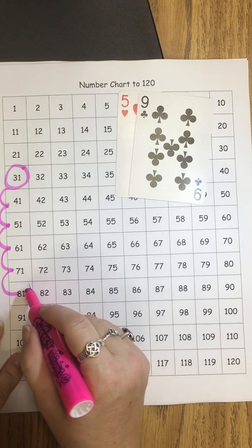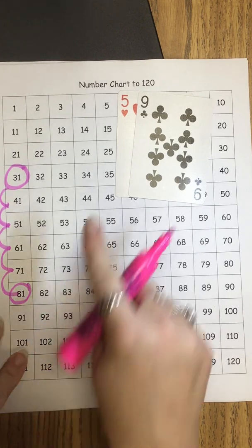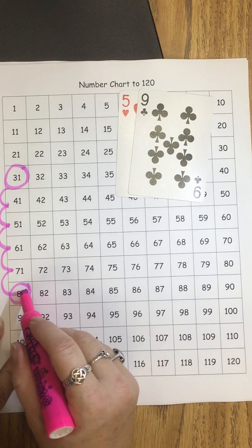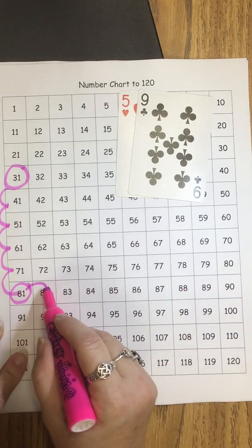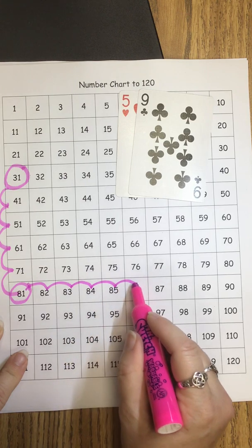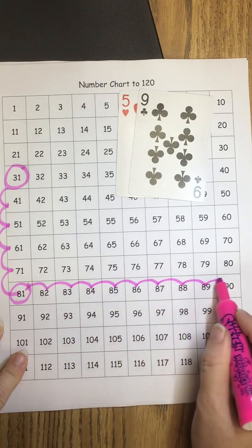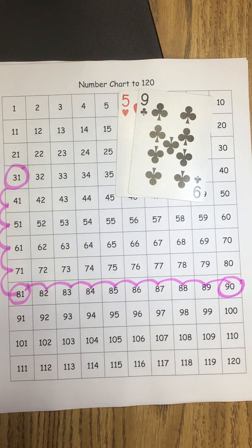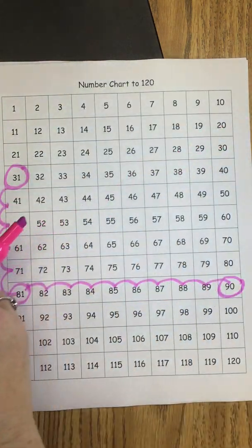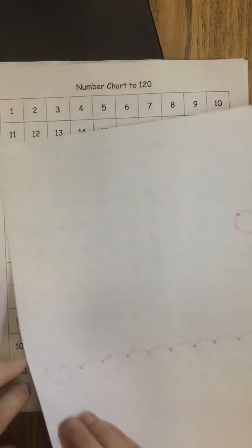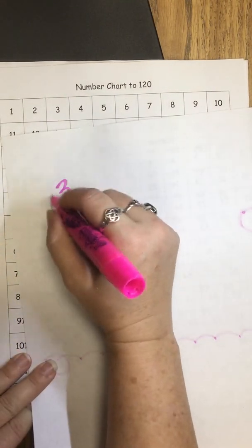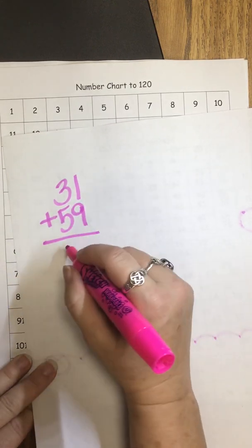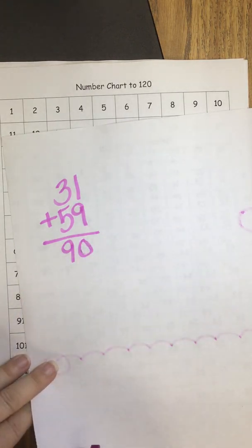So right now I'm at 81. That's not my answer because I need to also add 9 ones. To add ones, I'm going to count going 1 by 1. So I'm going to count 1, 2, 3, 4, 5, 6, 7, 8, 9. So my answer is 90. So I know 31 plus 59 equals 90. If you want to record the work that you're doing, you are welcome to write on the back or on another sheet of paper the work that you did. And we figured out that that was 90.